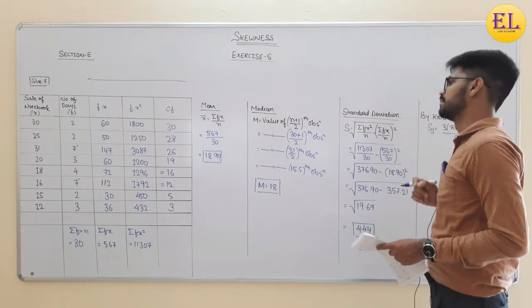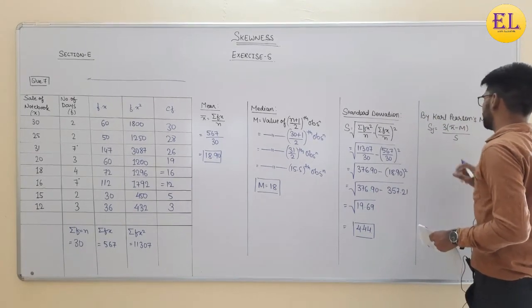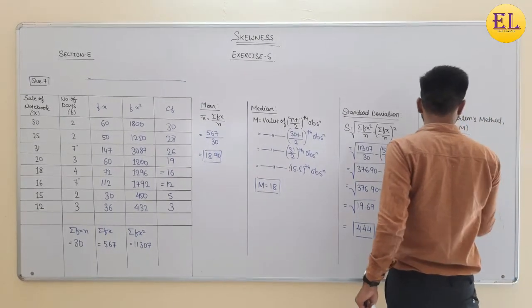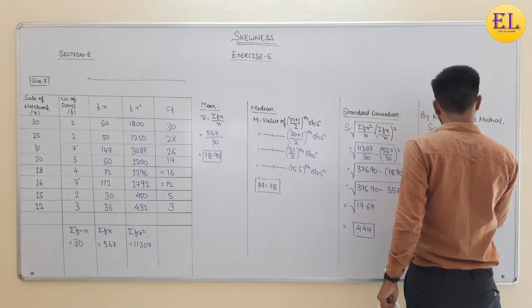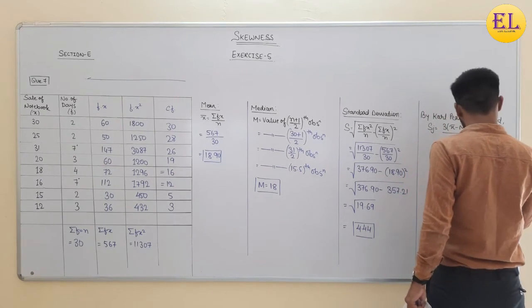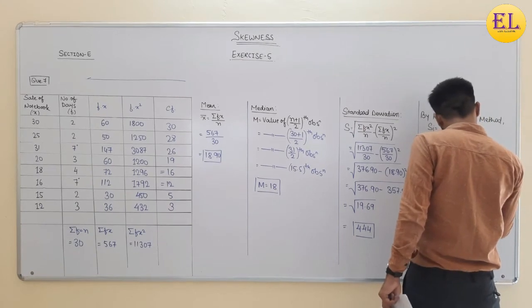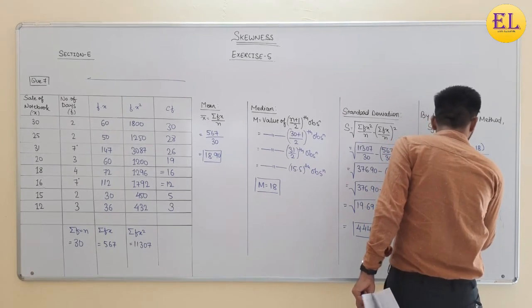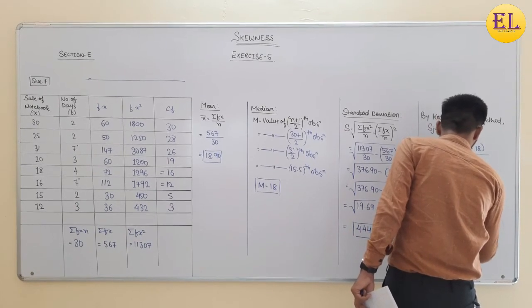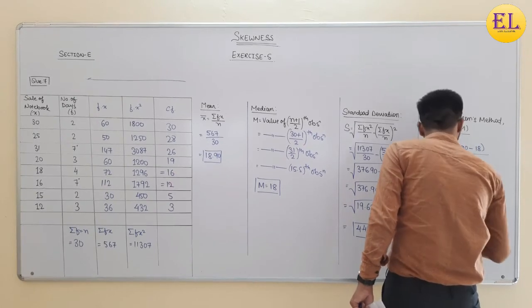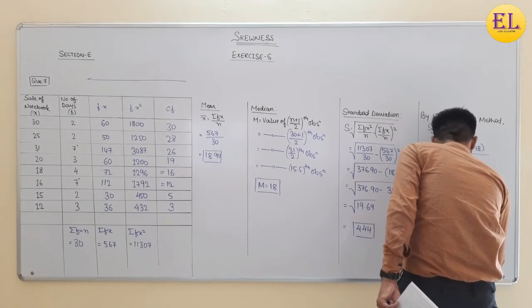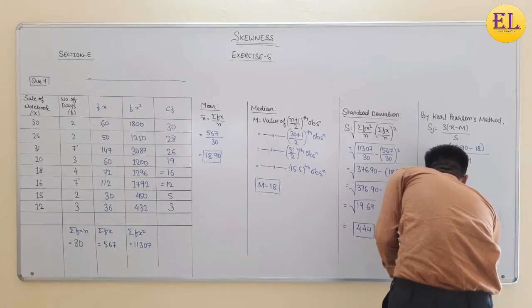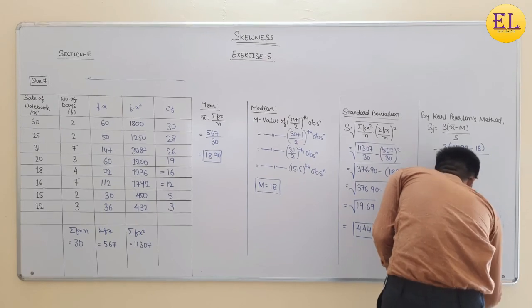We got the value for mean, median and standard deviation. In Carl Pearson's method, the formula to find coefficient of skewness is 3 into x bar minus M divided by standard deviation. Value put: 3 into 18.90 minus 18 divided by 4.44. Difference is 0.90 divided by 4.44. 3 into 0.90 is equal to 2.70, and the answer is 0.61.